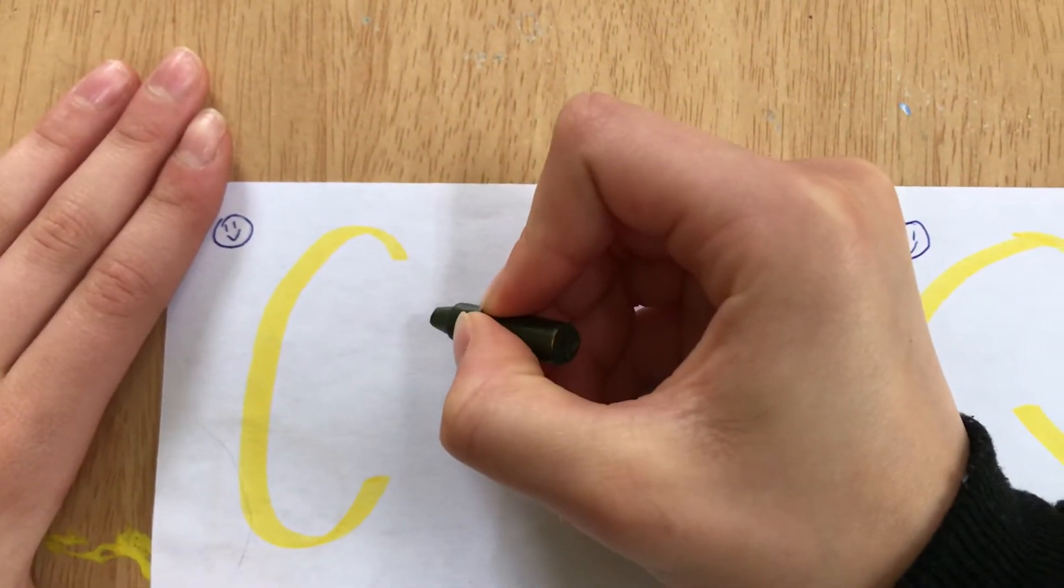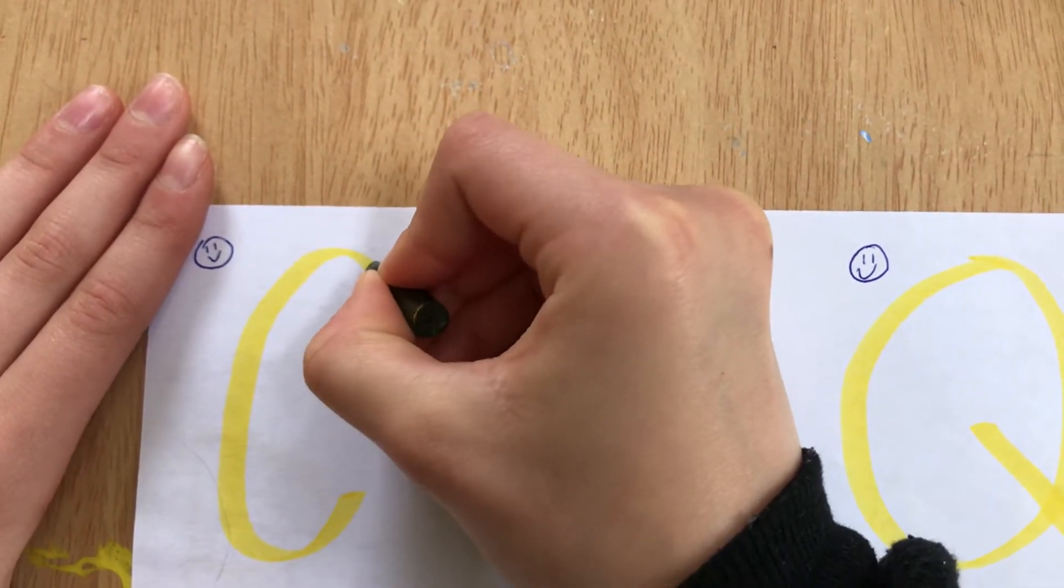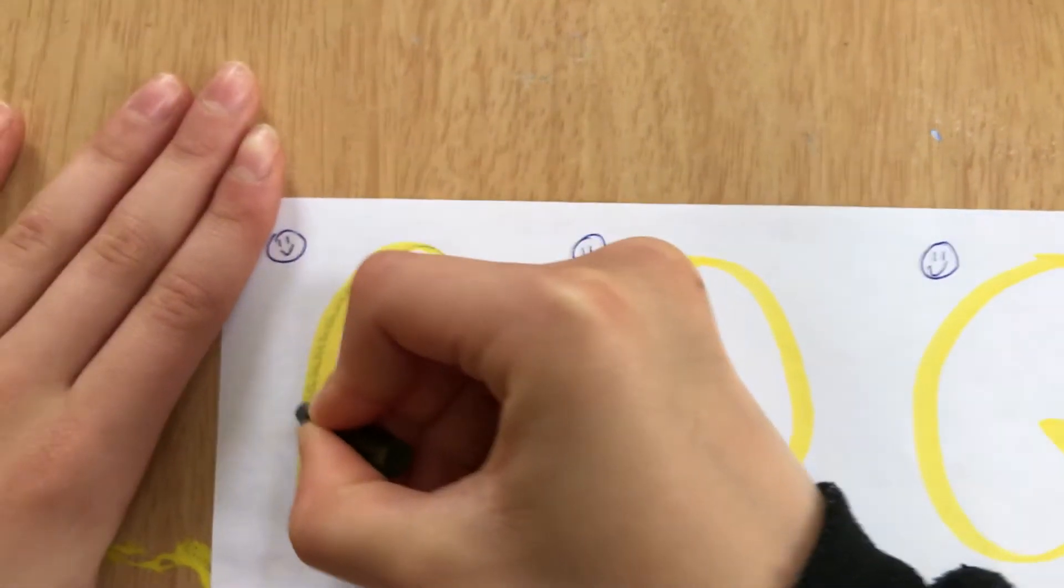So let's get started. Let's start with Magic C. Magic C starts in the middle and goes towards the smiley face.